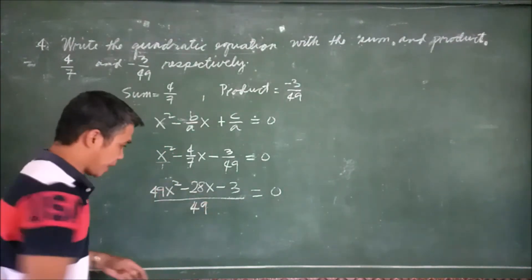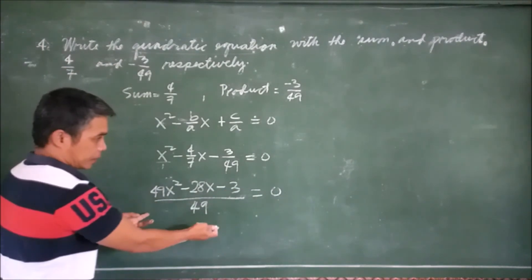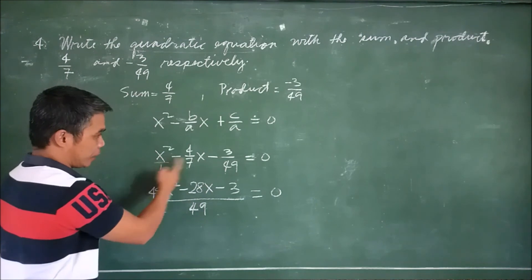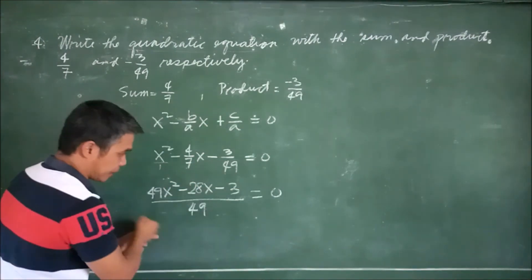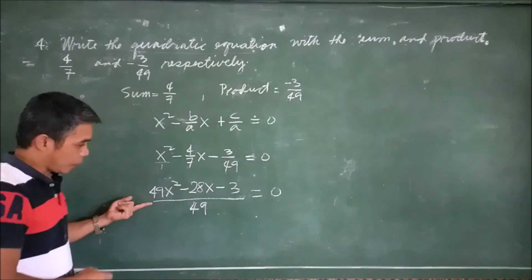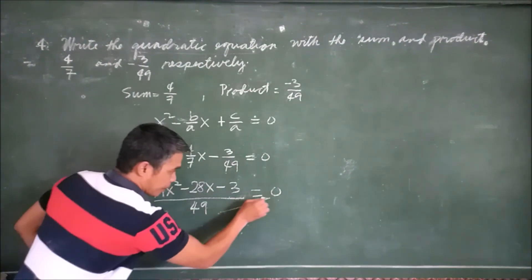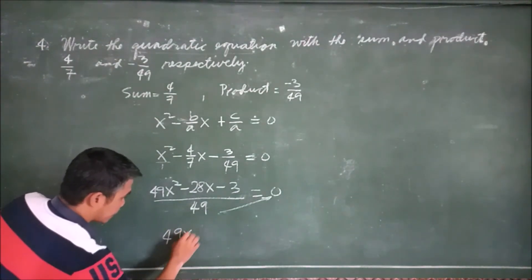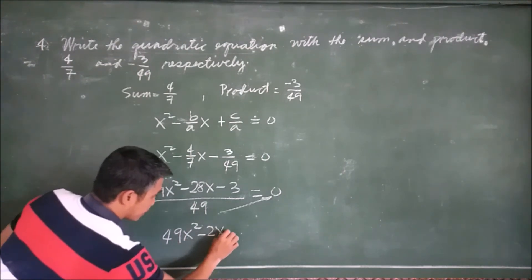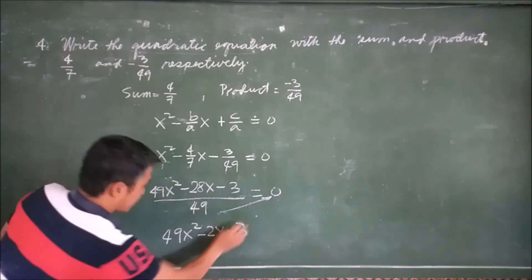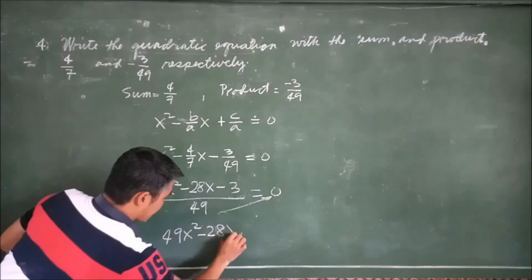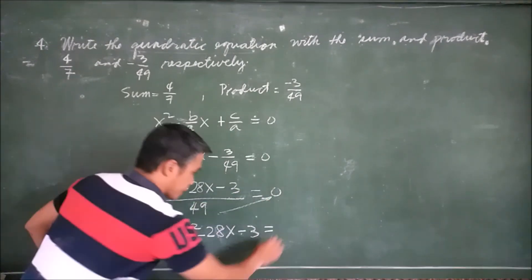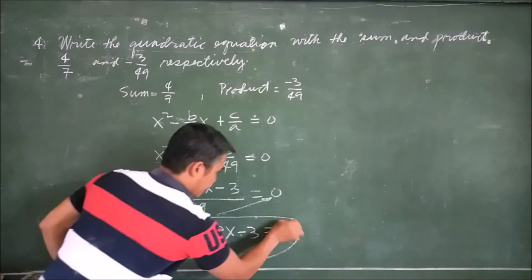Now we can cross-multiply since each term is now a single term. Previously we couldn't cross-multiply because there were still 3 separate fractional terms, but now after applying the LCD on the division bar, we cross-multiply. So: 49x² − 28x − 3 = 49 times 0 = 0. Therefore, 49x² − 28x − 3 = 0. This is now the equation.